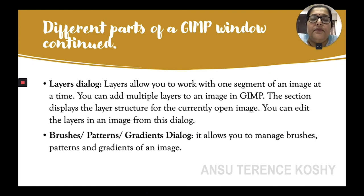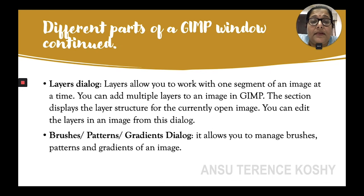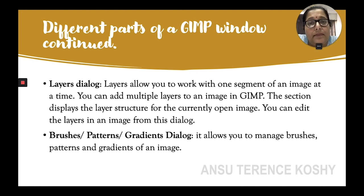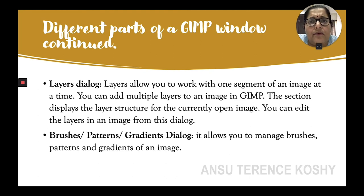On the right side you have the Layers Dialog Box. Layers allow you to work on a particular area of the image at a time. You can add multiple layers to an image in GIMP and work on it layer by layer. This section displays the layer structure for the currently open image — it shows only the layer you are currently working on. You can edit and make changes to each layer from this dialog box.